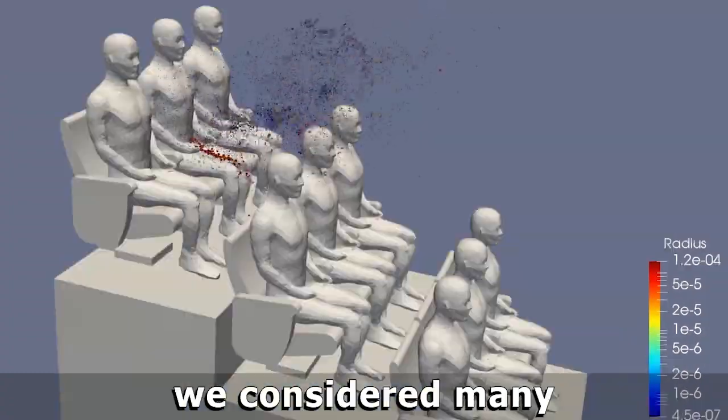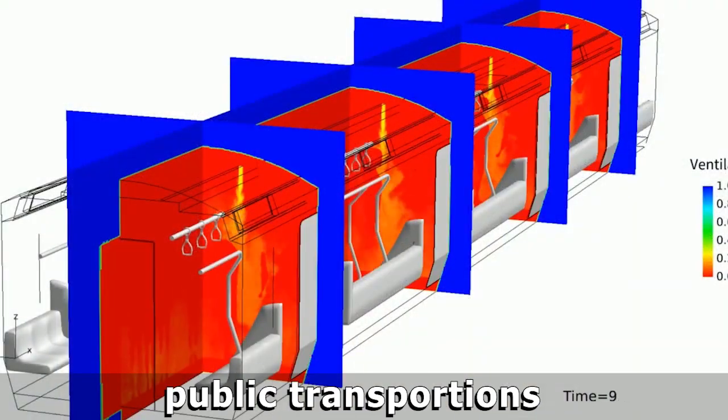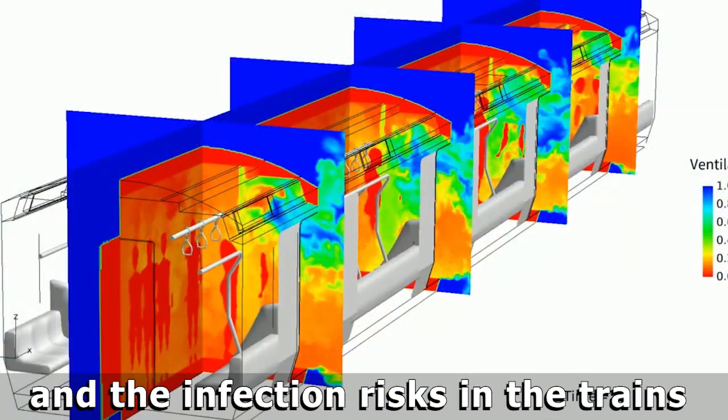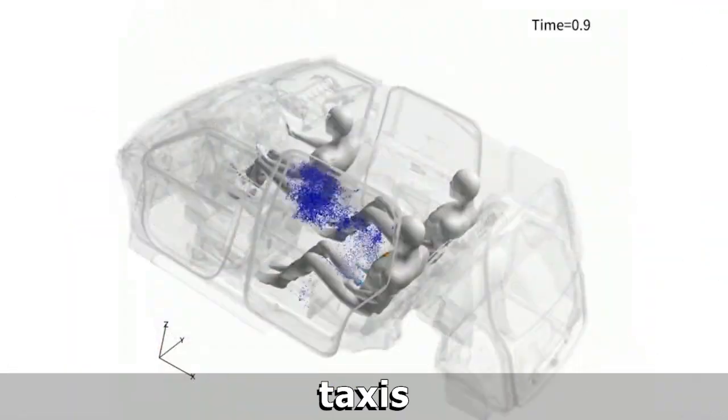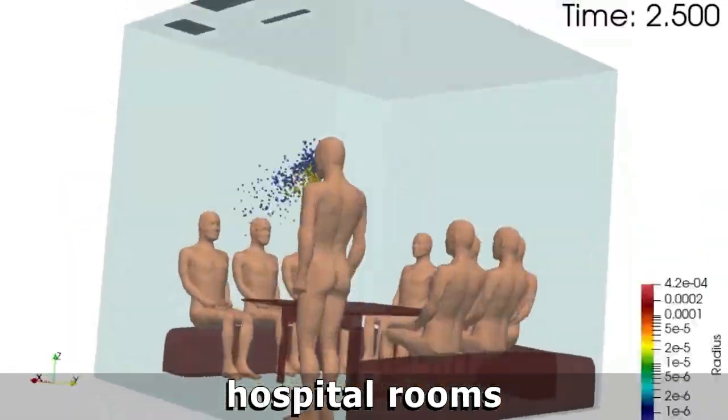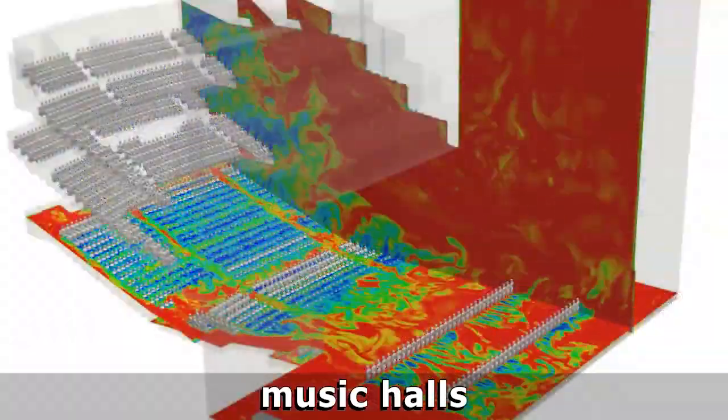Dispersion simulations are considered in many situations. Some of them include public transportation, like infection risks in trains, airplanes, taxis, and variations like hospital rooms, classrooms, music halls, and so on.